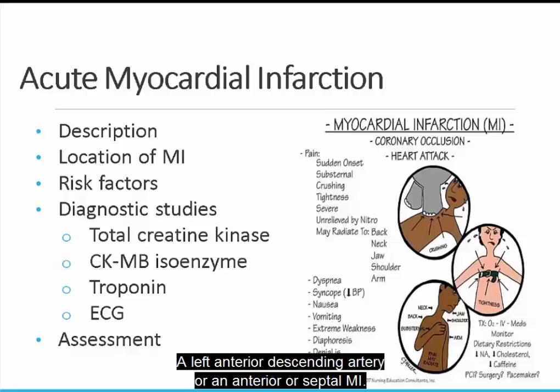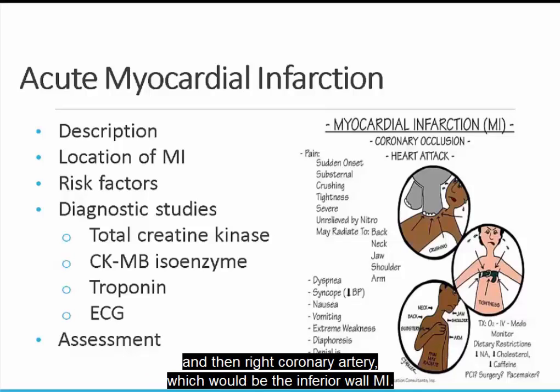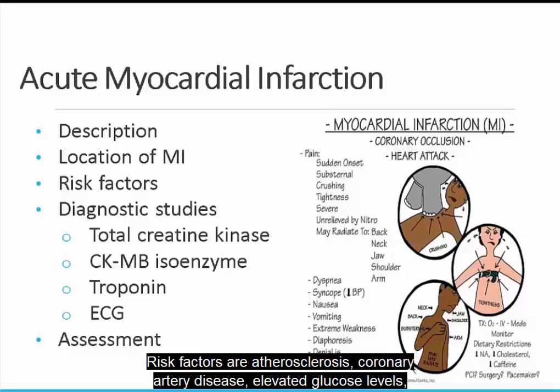MI locations: the left anterior descending artery corresponds to an anterior or septal MI. The circumflex artery corresponds to a posterior or lateral wall MI, and the right coronary artery corresponds to an inferior wall MI. Risk factors include atherosclerosis, coronary artery disease, elevated glucose levels, smoking, hypertension, obesity, inactivity, impaired glucose tolerance, and stress.